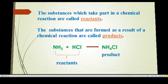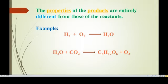What happens to the properties of the products? Are the properties of the products the same as those of the reactants? No. The properties of the products are entirely different from those of the reactants. For example, hydrogen reacts with oxygen to produce water. Both hydrogen and oxygen are gases, but the product water is a liquid — so the properties are different.